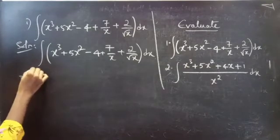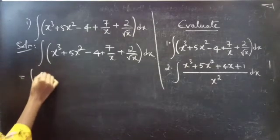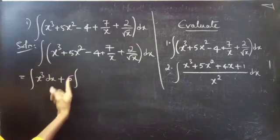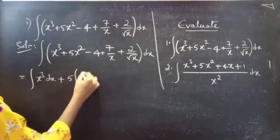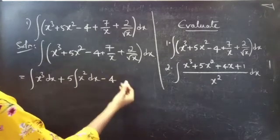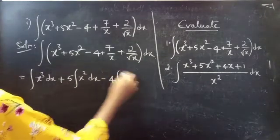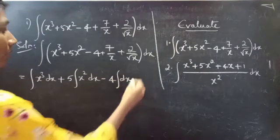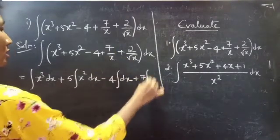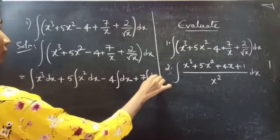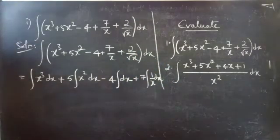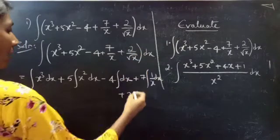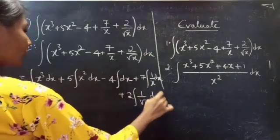Solution. We have integral of x cubed plus 5x squared minus 4 plus 7 by x plus 2 by root x, dx. We can write it as integral x cubed dx plus, since 5 is a constant you can take it outside the integral, 5 integral x squared dx minus 4 integral dx plus 7 integral 1 by x dx.